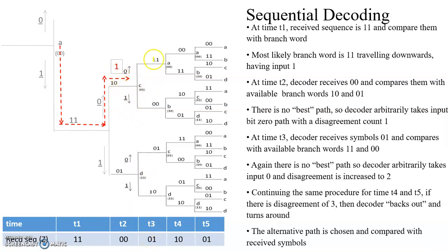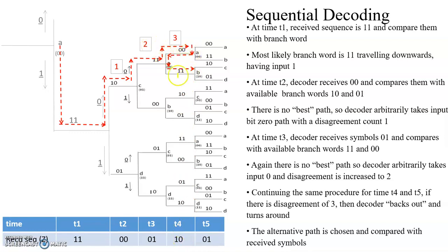The next received sequence is 0,1. Again, we see two output paths: 1,1 and 0,0, which are not matching with 0,1. So we choose the upper path by default. Comparing 1,1 with received 0,1, the first bit is different, so the disagreement count is 1, plus the previous 1, giving a total disagreement count of 2. Again at the next step, with two paths compared to received 1,0, none are matching, so we choose the upper path, and the disagreement count becomes 1 plus 2, which is 3.